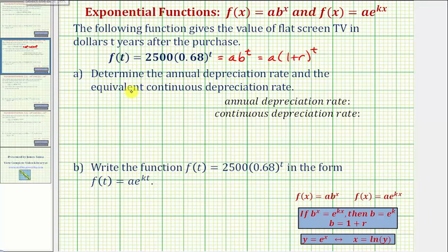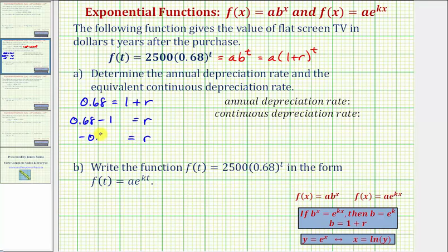Let's first determine r, which will give us the annual depreciation rate. We have 0.68 equals one plus r. So r equals 0.68 minus one, giving us r equals negative 0.32. Notice how the rate r as a percentage would be negative 32%, which means we have exponential decay, and therefore the annual depreciation rate is 32%.